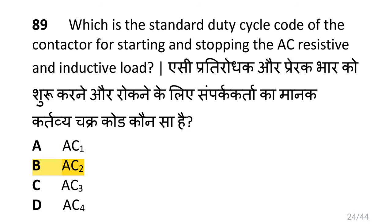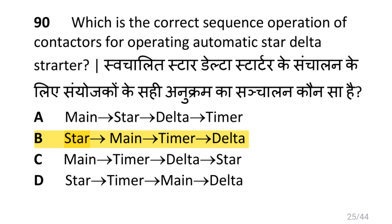Which is the standard duty cycle code of the contactor for starting and stopping of AC resistive and inductive load? i.e. AC2. Which is the correct sequence of operation of a contactor for operating automatic star delta starter? i.e. star, main, timer, then delta.